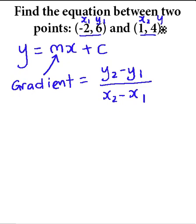Let's substitute the values into this equation. So the gradient m is equal to y2, which is 4, minus y1, which is 6, over x2, which is 1, minus x1, which is -2.